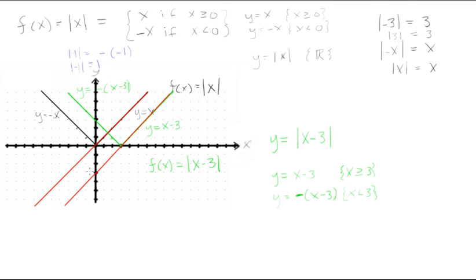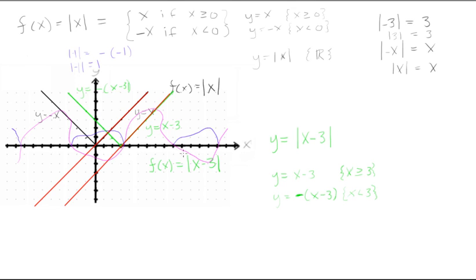Say you had some other crazy function. If you wanted to take the absolute value of it, what you'd do is reflect the parts that are below the x-axis back over the x-axis. So the absolute value of this purple function would include the blue regions above the x-axis and exclude those purple regions underneath it — they get reflected up.